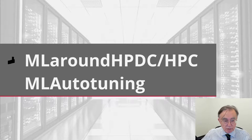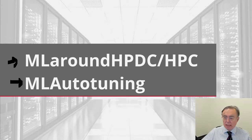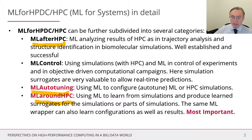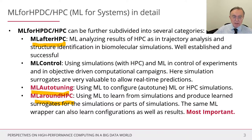We focused on what I call ML around HPC and ML auto-tuning, starting actually with the latter. Although we're going to be focusing on ML auto-tuning and ML around HPC, let's define all the ML for systems or ML for HPDC/HPC possibilities. ML after HPC is a very important area — it corresponds to using machine learning to analyze the results of HPC simulations, such as finding trajectories of molecular simulations or the structure you get out from a simulation. This is very well established and very successful. There are packages like CP-trash and MD analysis that we use to do that.